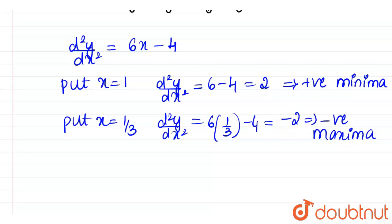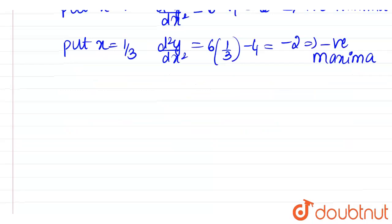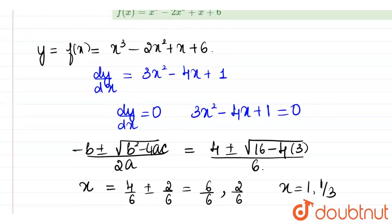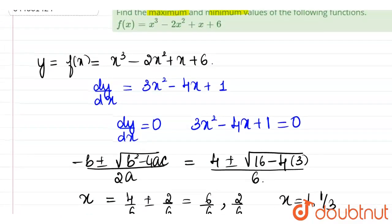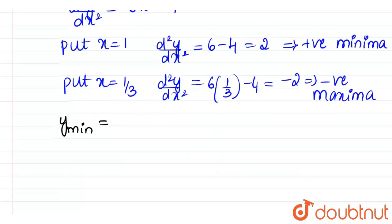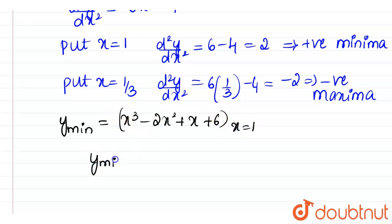Minima will be occurring at plus 2. Therefore, minimum and maximum values of the function will now be equal to y minimum will be happening when x is equal to 1. So if I am putting x equal to 1, it will be 1 x cube minus 2x square plus x plus 6. This happens at x is equal to 1. So the minimum value of the function will be equal to 1 minus 2 plus 1 plus 6. 1 minus 2 is minus 1. So this will be 6.